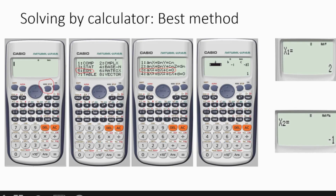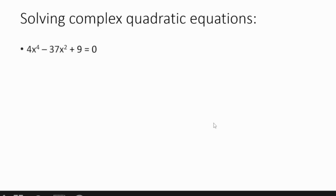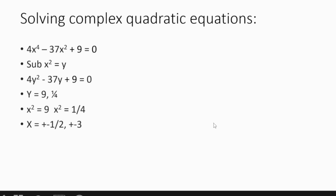Now let's move on to solving complex quadratic equations. Take the equation 4x⁴ - 37x² + 9 = 0. Substitute x² = y, so the equation becomes 4y² - 37y + 9 = 0, which is a standard quadratic. Put that into the calculator to get y = 9 and y = 1/4. Then substitute back x² = y: so x² = 9 and x² = 1/4. Take the square root of both sides — remember to include both plus and minus.